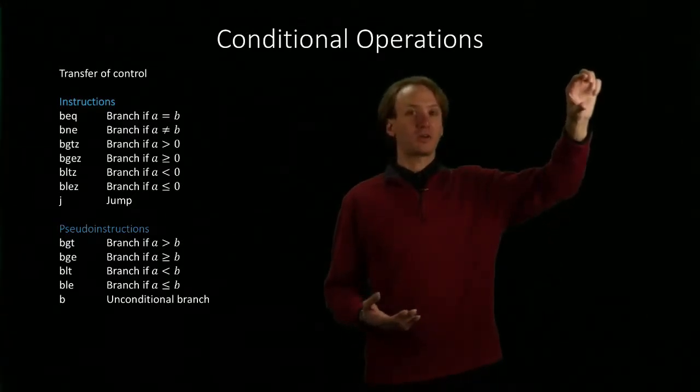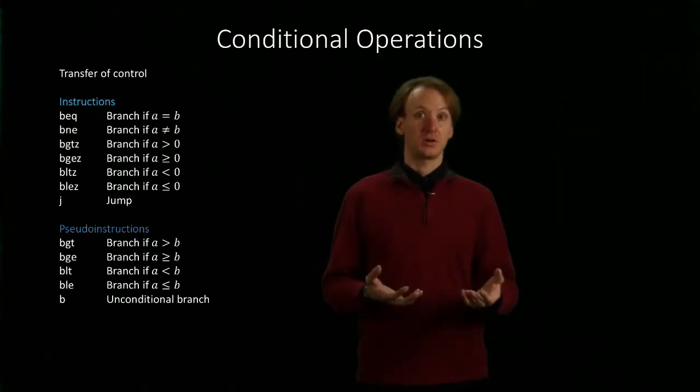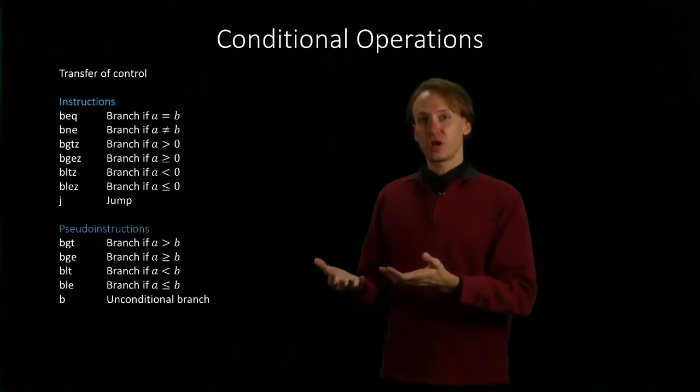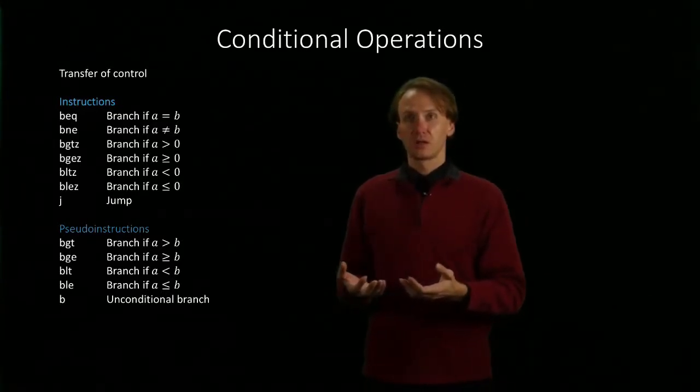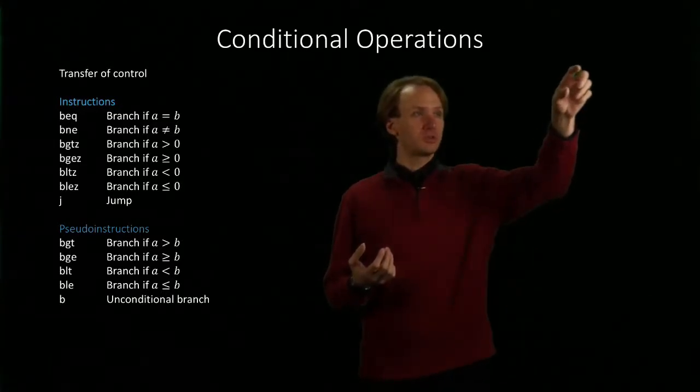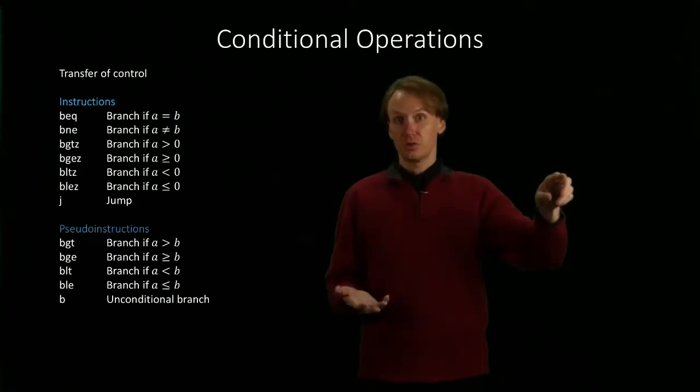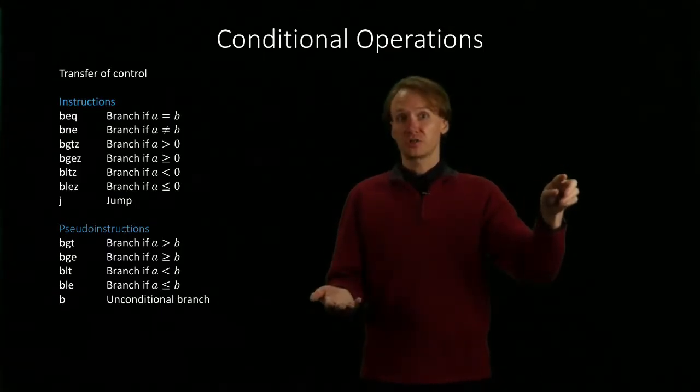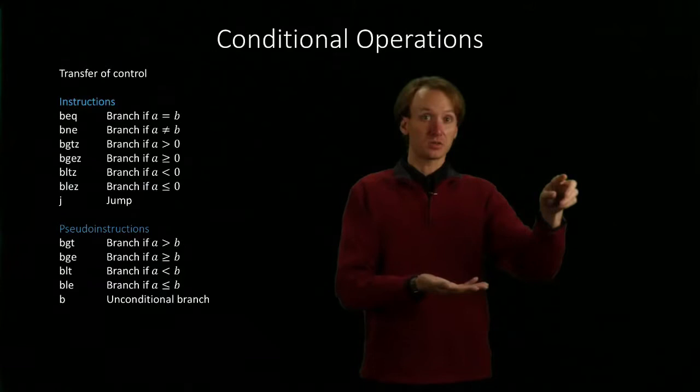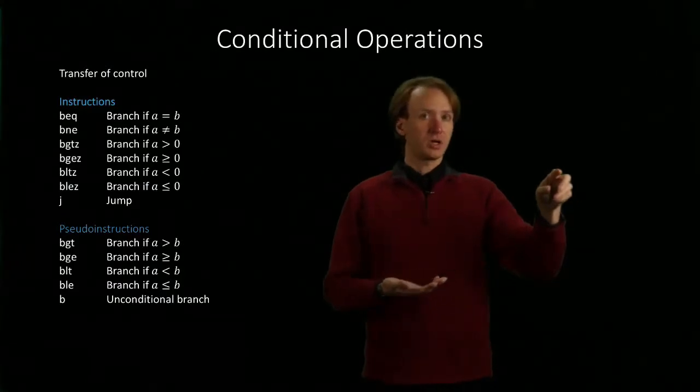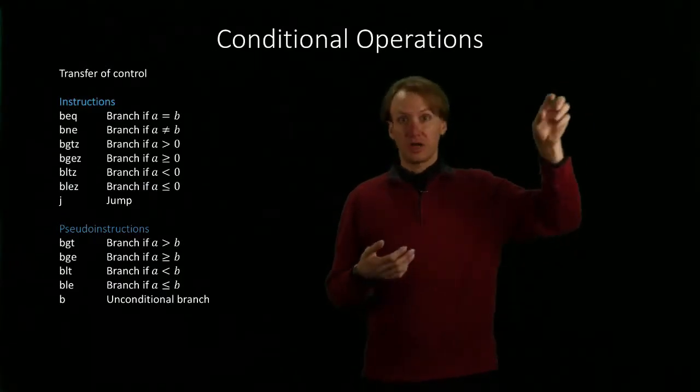Maybe I only want to run this block of code if something specific has occurred. For example, if I'm using the branch equals instruction, it will skip to whatever line of code I tell it to go to if the value of my first source register is equal to the value of my second source register. But otherwise, it's just going to go run that next line of code.